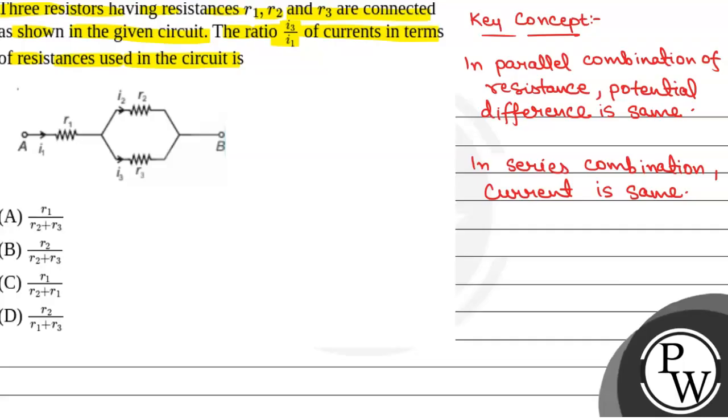And also from Ohm's law, V is equal to I into R, where V is the potential drop or potential difference, I is the current flowing and R is the resistance. So this will be the key concept we will use to solve this question.